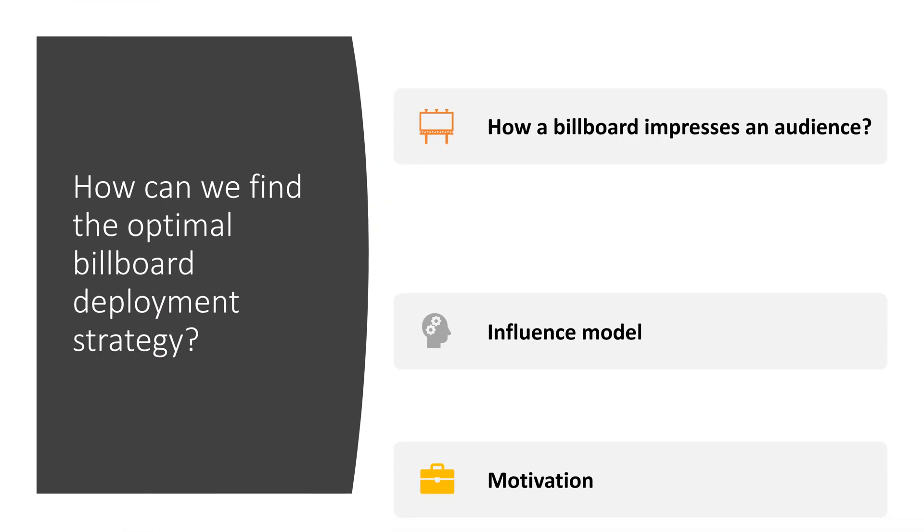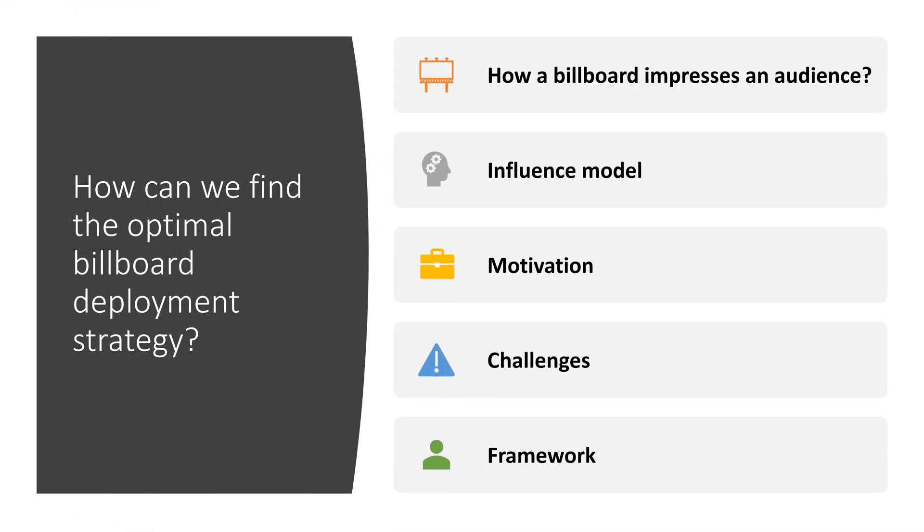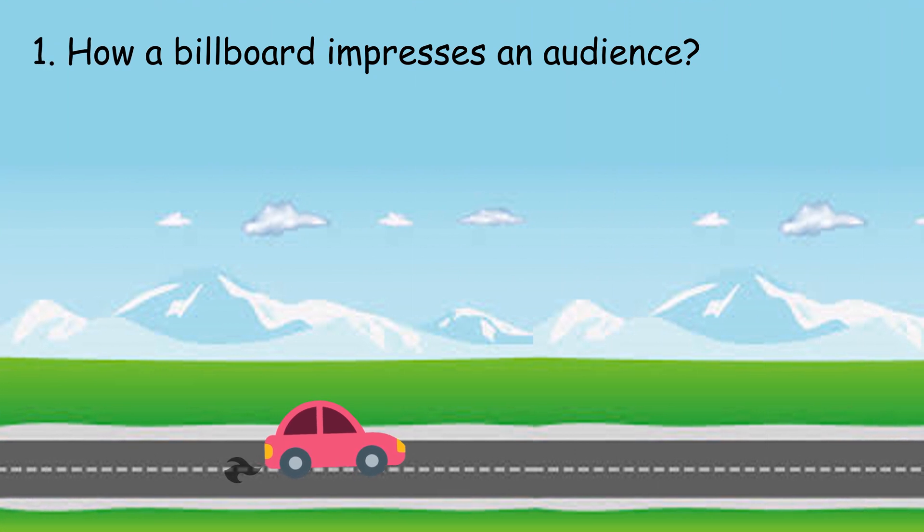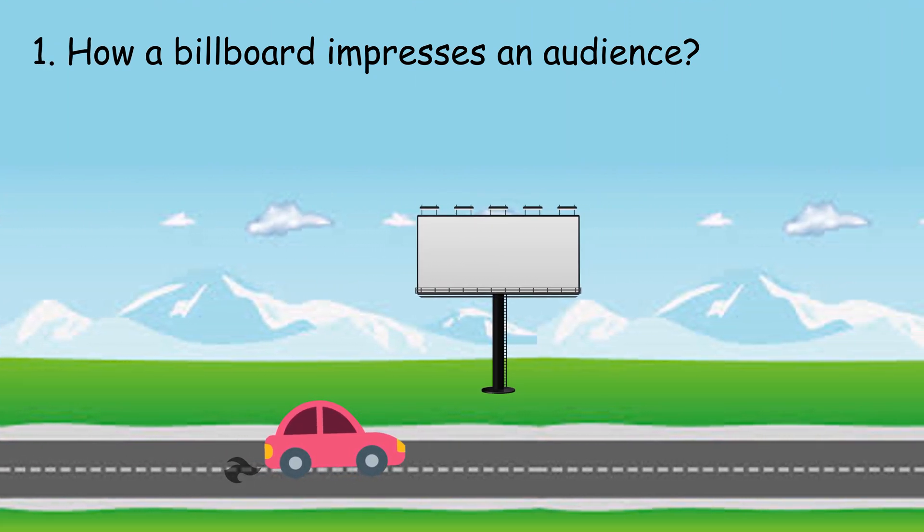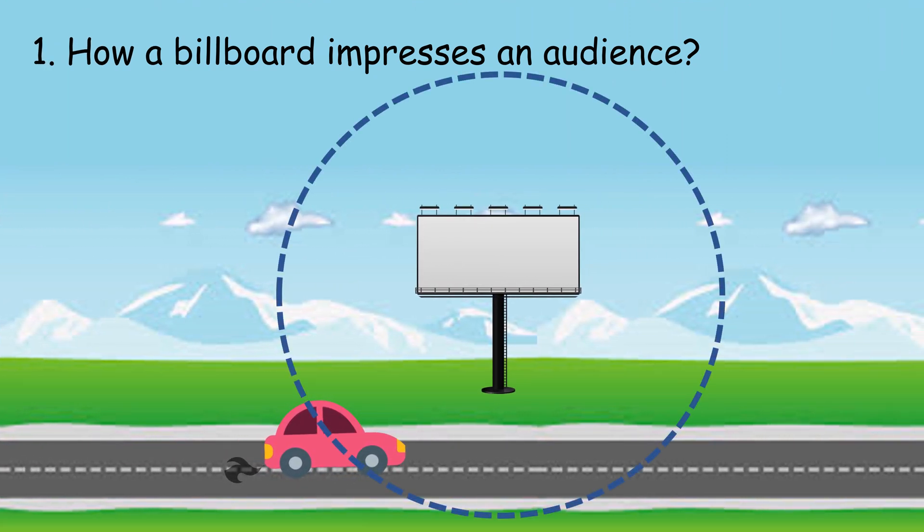Before explaining how to find the optimal strategy, the first challenge is how to measure the advertising influence to an audience. Assume a driving car meets a billboard. Each billboard has an influence range. When the driver is in the range, we say this driver is impressed.